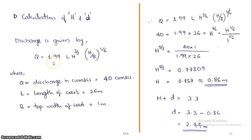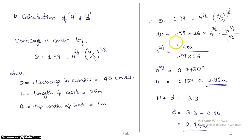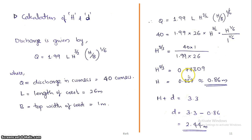The discharge equation is Q = 1.99 × L × H^(3/2) × (H/b)^(1/6). Here Q = 40 cumecs, the length of crust L = 26 meters, and top width b = 1 meter. Substituting these values, we get H = 0.77, and we provide H = 0.86 m. Therefore d = 3.3 − 0.86 = 2.44 meters.